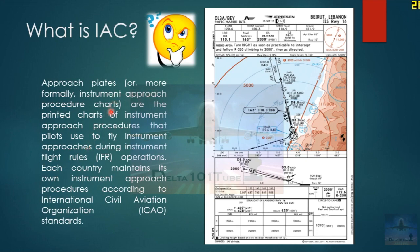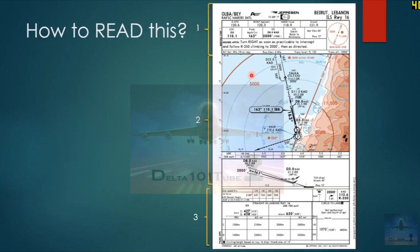Now what is IAC? Approach plates, or more formally instrument approach procedure charts, are the printed charts of instrument approach procedures that pilots use to fly instrument approaches during instrument flight rules or IFR operations. Each country maintains its own instrument approach procedures according to International Civil Aviation Organization or ICAO standards. On the right you can see what an instrument approach plate looks like.